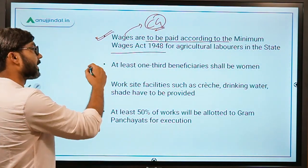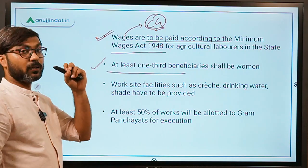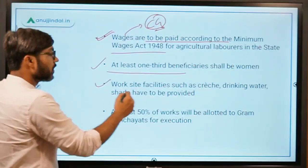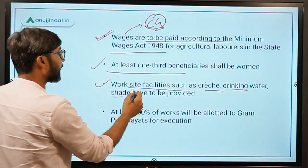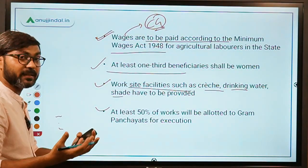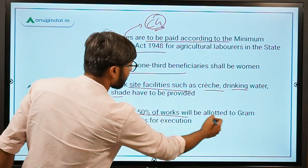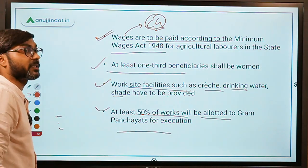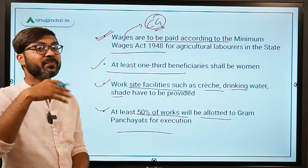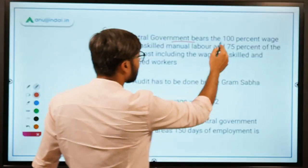A very important provision of this act is that at least one-third of the beneficiaries of this scheme should be women. Worksite facilities are to be provided, such as a crèche, drinking water, and shades, to cover the human aspect for MNREGS laborers. At least 50 percent of the work will be allotted to gram panchayats for execution.